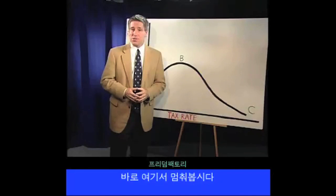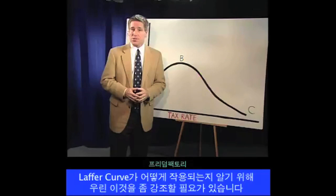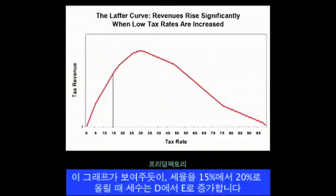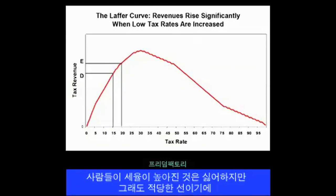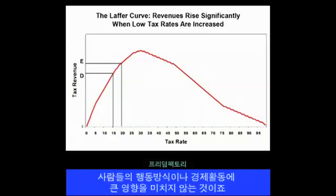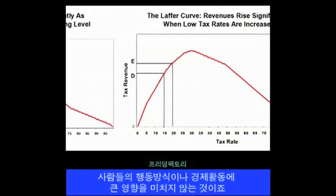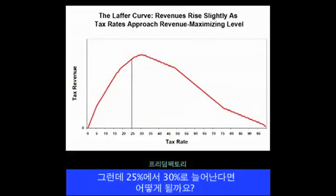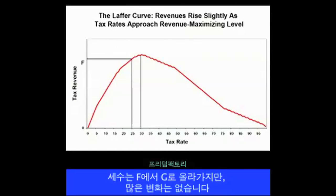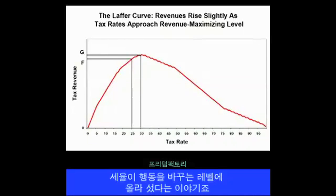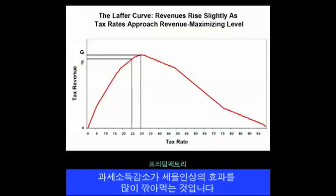Let's stop here, because this point needs to be emphasized so we understand how the Laffer Curve operates. As this graph illustrates, if we raise the tax rate from 15% to 20%, tax revenues will rise from point D to point E. Revenues climb because, even though people may not like the higher tax rate, it's still at a reasonable level so it won't cause big changes in behavior or have a big effect on economic performance. But if the tax rate rises from 25% to 30%, revenues still rise from point F to point G, but the revenue increase is tiny because the tax rate is reaching a level where people do change their behavior and the decline in taxable income almost offsets the impact of the higher tax rate.